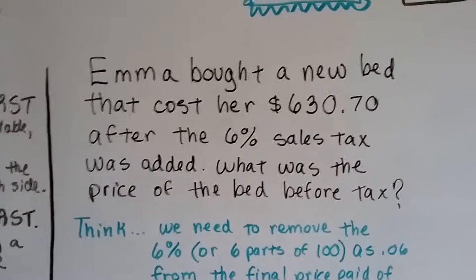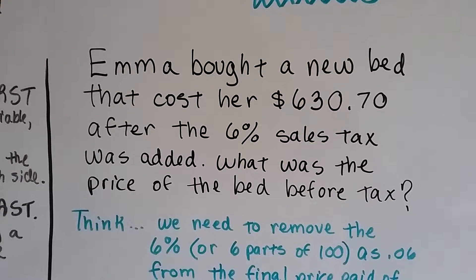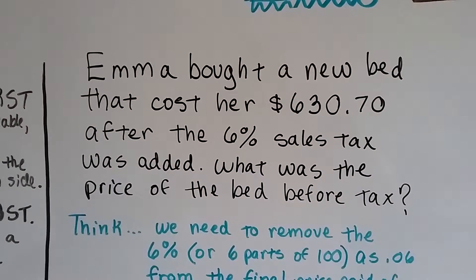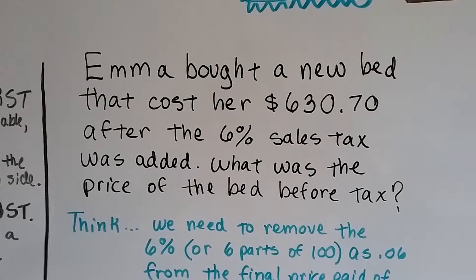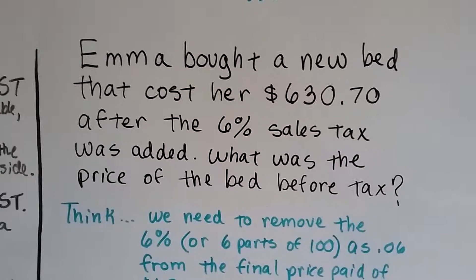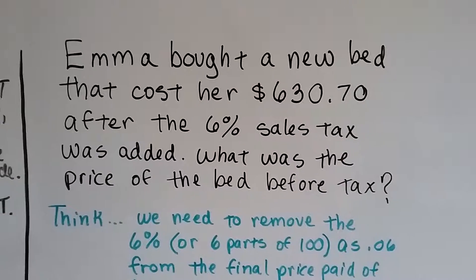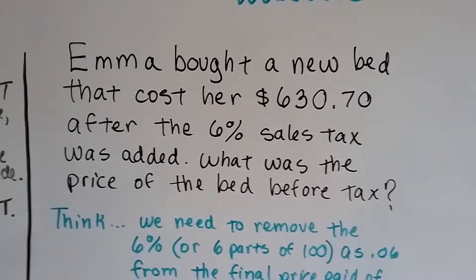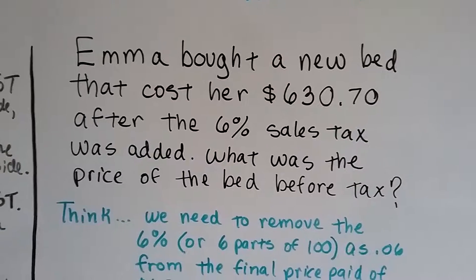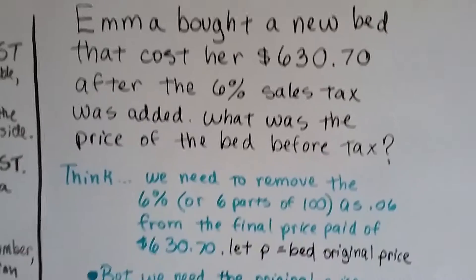So here's our sales tax problem. Emma bought a new bed that cost her $630.70. That's the total price when she walked out the door. That was after the sales tax was added on. What was the price of the bed before the tax? What was the original price of the bed on the tag?